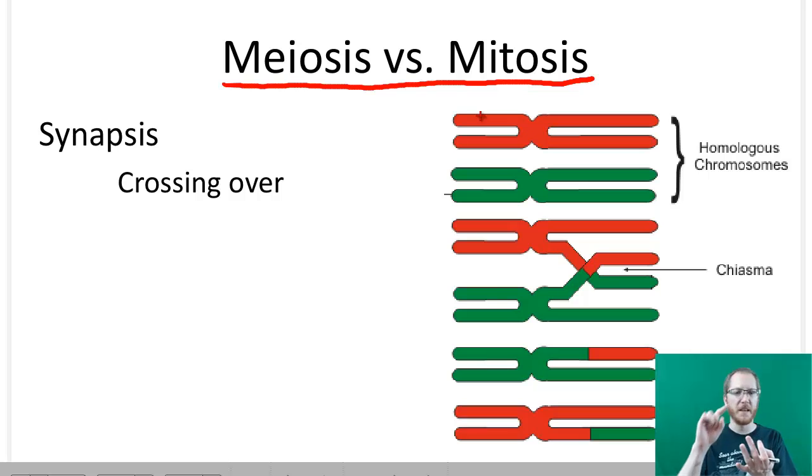It'll go through prophase, prometaphase, metaphase, anaphase, telophase, all the normal stuff, cytokinesis following that. So meiosis 1 will have all the phases that mitosis does. And then meiosis 2 will also have all the same things.